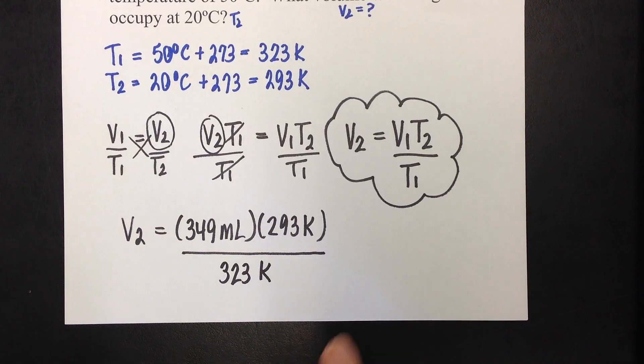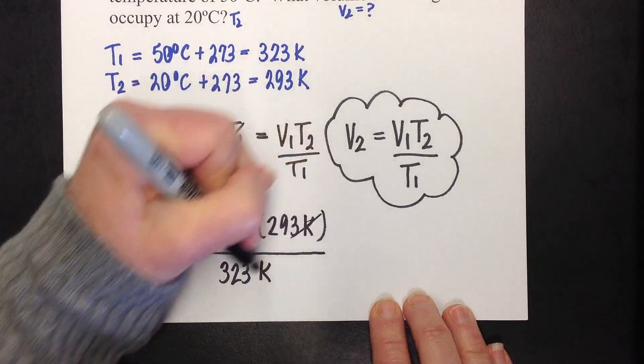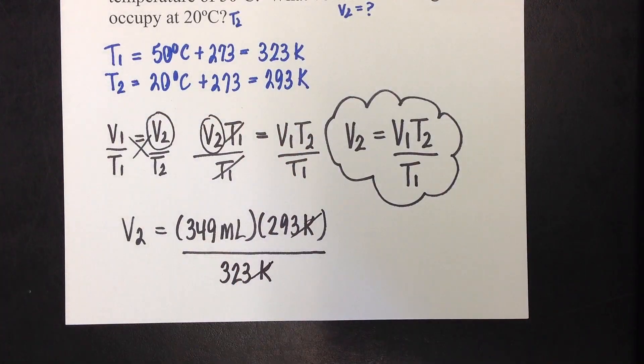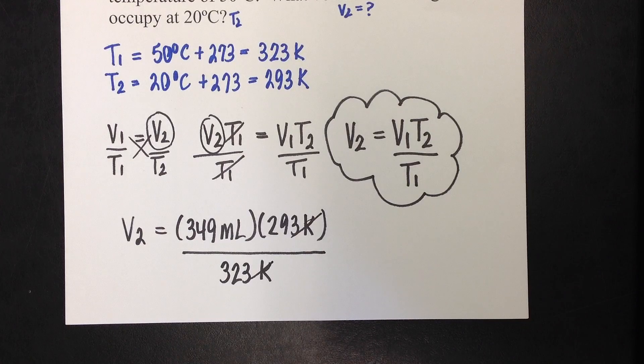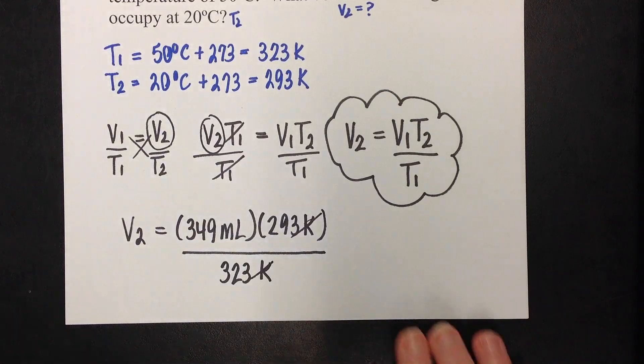Now, I like it set up this way, because I can very quickly see the Kelvins are going to cancel, and I'm left with the unit of milliliter. That's good news, because they asked me to solve for volume, and milliliter is a unit of volume.